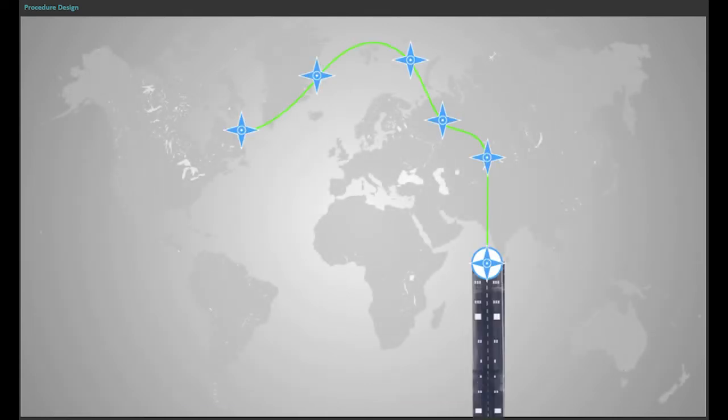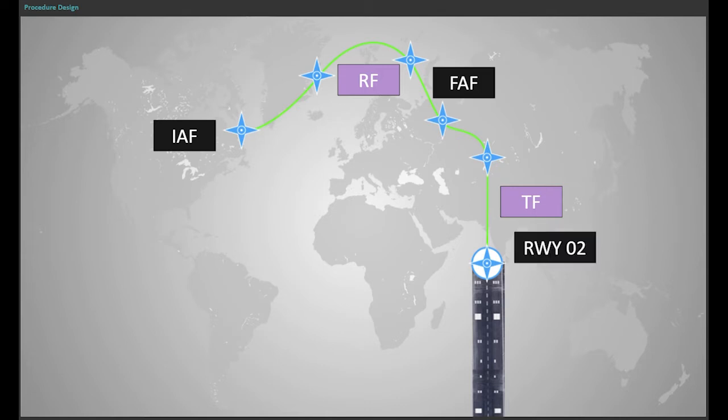A RNP-AR procedure is defined laterally and vertically using successive legs between waypoints. All waypoint coordinates are expressed in WGS84.